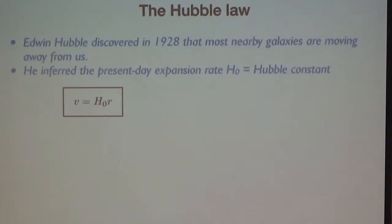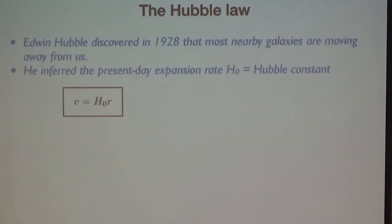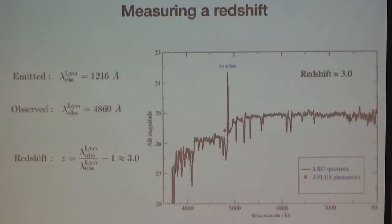Let me explain how he did the measurement. What Hubble actually measured was H₀. He needed a velocity — interpreted from the cosmic redshift as a Doppler shift — and also a physical distance to the object. How do you measure a redshift? It's very simple: you take the spectrum of any distant object and look for spectral lines in the spectrum.